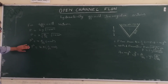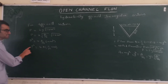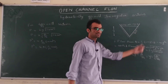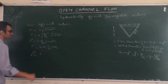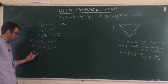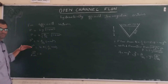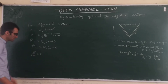For achieving hydraulic efficiency, we need the perimeter to be minimum. The perimeter will change with the change in the side slope M. So we differentiate P with respect to M and set it equal to zero. For minimum perimeter with respect to side slope, the rate of change of P with respect to M equals zero.